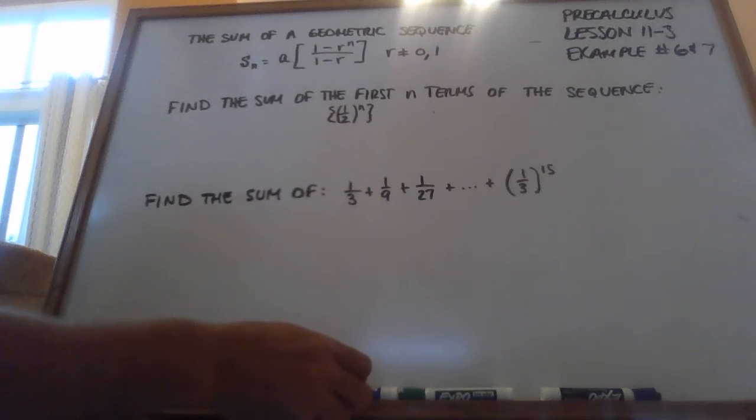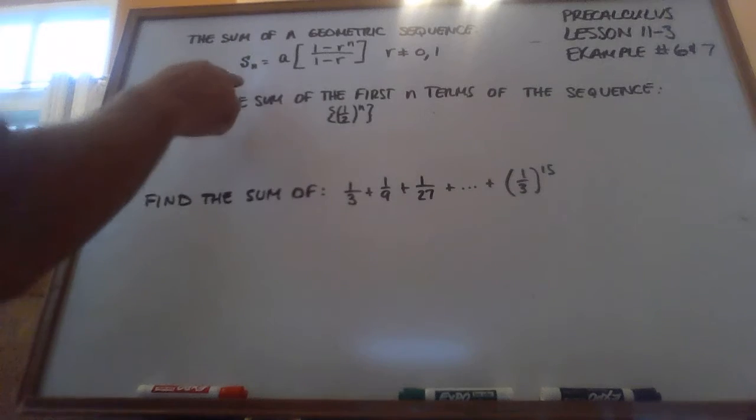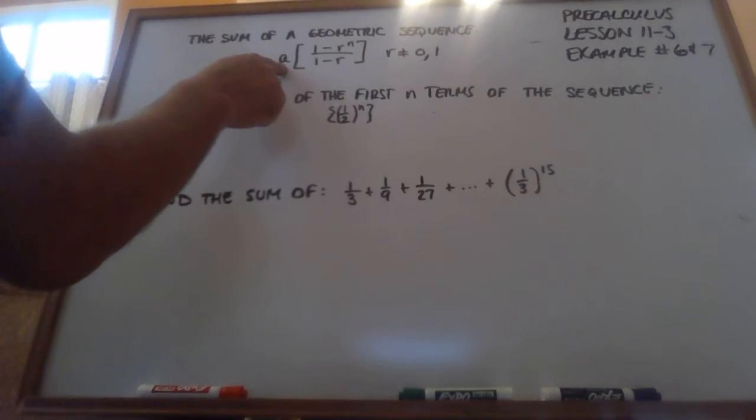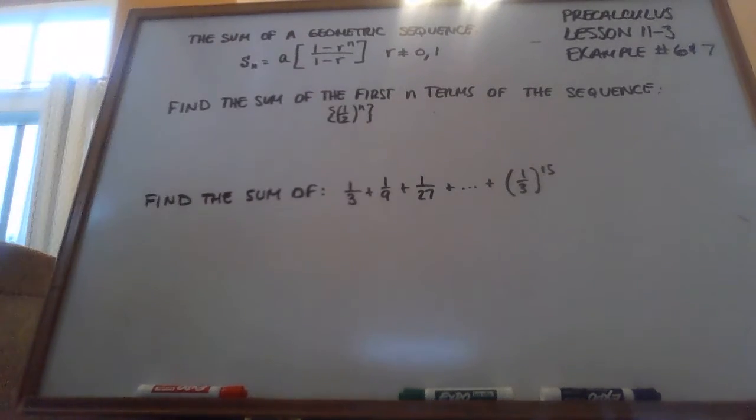Okay, here I have two examples, examples 6 and 7. We're going to find the sum of a geometric sequence. And there's a formula for that, it's on your formula sheet. S of n equals a times 1 minus r to the n power divided by 1 minus r, as long as r is not 0 or 1.